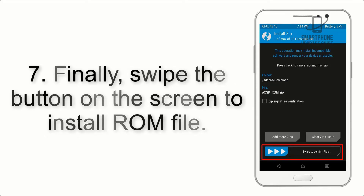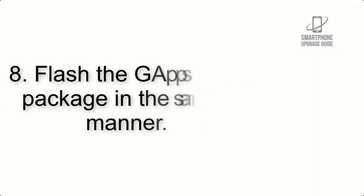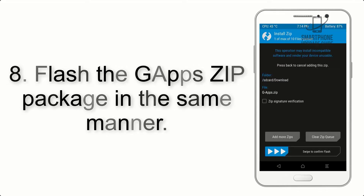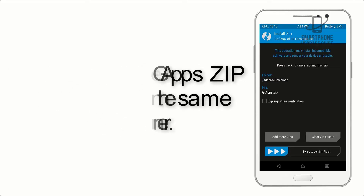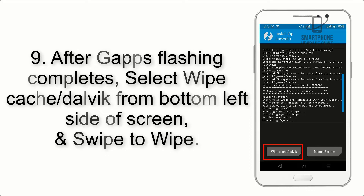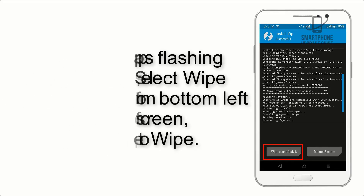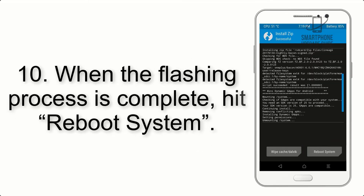Step 8: Flash the GApps zip package in the same manner. Step 9: After GApps flashing completes, select Wipe Cache and Dalvik from the bottom left side of the screen and swipe to wipe. Step 10: When the flashing process is complete, hit Reboot System.